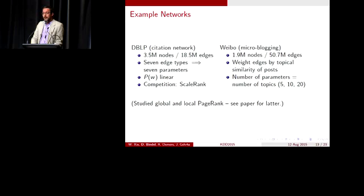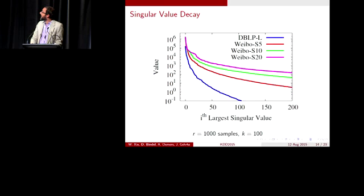In the DBLP network, we have weights that are associated with different edge types. This is a linear parameterization, and so we can actually compare to scale rank head-to-head. With Weibo, we used edge weights that are based on similarities, cosine similarities between topic distributions that are learned for each of the microblog posts.